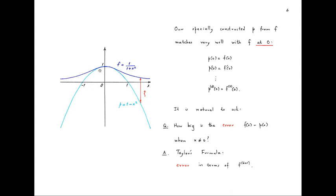If our given function is indicated by the dark blue line and our constructed polynomial p by the light blue line, then what we know about this polynomial p is that its value at 0 matches with the value of f at 0, also the slope of the tangent line to the graph of p at 0 matches with the slope of the tangent line to the graph of f at 0, and this continues all the way to the dth derivative of p at 0 matching with the dth derivative of f at 0. So p matches very well with f at 0, but what happens for non-zero x's? It is natural to ask how big is the error f(x) minus p(x) when x is not equal to 0, and Taylor's formula answers this question — it tells us what this error is in terms of the (d+1)th derivative of f.